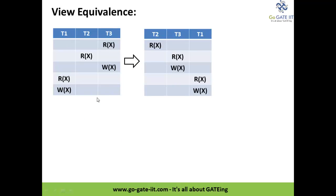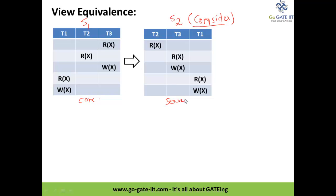You can notice we have a given schedule S1, and the equivalent serial schedule is S2. This is the concurrent schedule with transactions T1, T2, and T3, and this is the serial schedule we have assumed as the respective serial schedule.